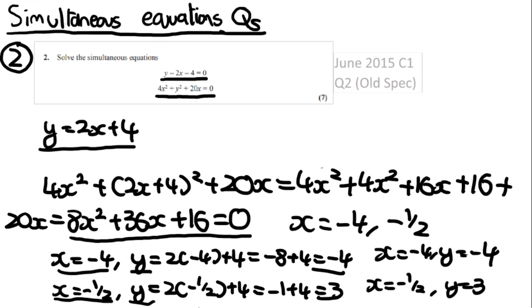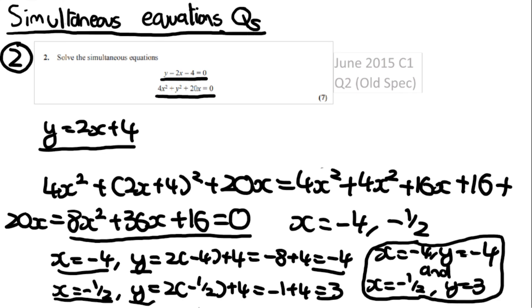So the solutions are x = −4, y = −4 and x = −1/2, y = 3. Remember to get the pairings correct, and if you have time in the exam, check by substituting the solutions back into the simultaneous equations.